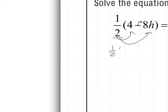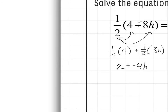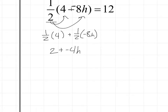1.5 times 4 plus 1.5 times negative 8h. This is 1.5 times 4, which is going to give me 2. 1.5 times negative 8h is going to give me negative 4h, and that is equal to 12.